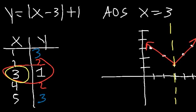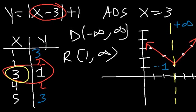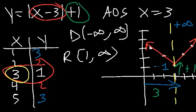The domain is all real numbers, negative infinity to infinity. For the range, look at the lowest y value — it's 1. The highest is infinity since the graph goes in the upward direction. So the range is from 1 to infinity. Now for the transformations: if you see x minus 3 on the inside, flip the sign — that means it's going to move 3 units to the right. We have a plus 1 on the outside — don't flip — it's going to go up 1. So the graph shifts 3 units to the right and up 1 unit. The slope, the number in front of x, is 1 — so from the vertex, as you go 1 to the right, you go up 1. You can graph using transformations, which is what we'll do in the next example.